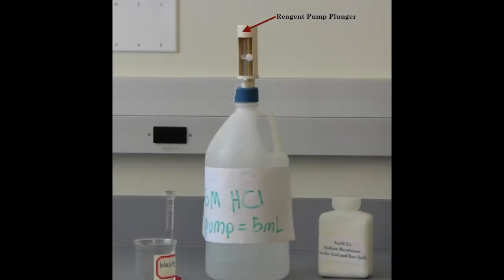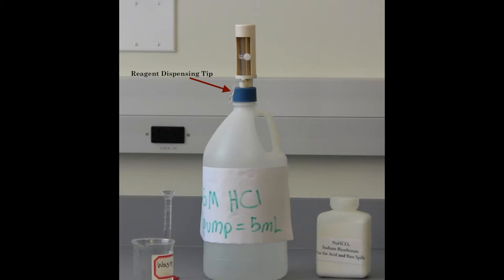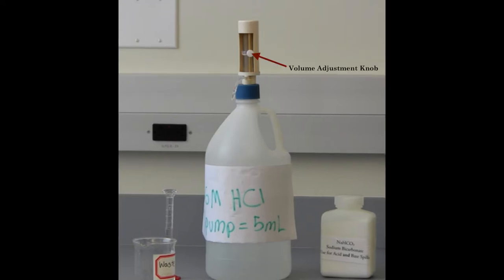Now let us examine the reagent pump. The pump itself has a few components: a plunger to lift and release for reagent flow, a plastic tip for precise allocation of reagent, and a volume adjustment knob. Do not touch the volume adjustment knob. This knob has been set prior to the lab.